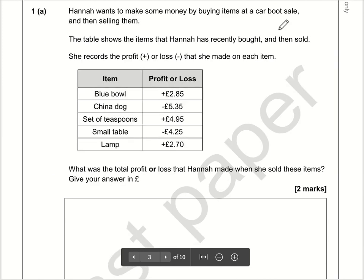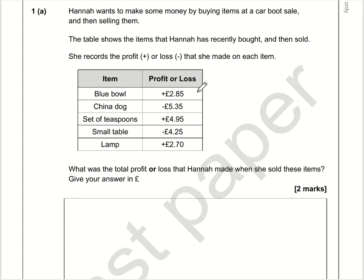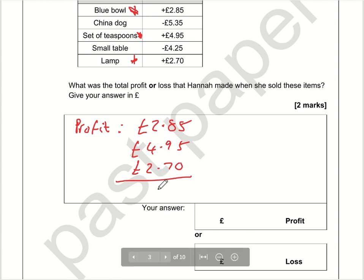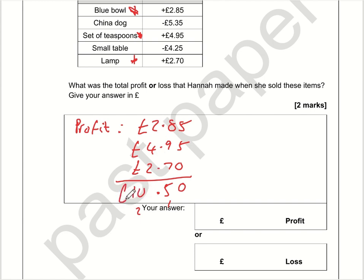We want to work out the total profit or loss when we factor in the individual profit or loss of each item. First, let's work out the profit from the items she's made a profit on: the blue bowl, the set of teaspoons, and the lamp. That is £2.85 plus £4.95 plus £2.70. Five plus five is ten, carry one; nine plus one is ten; and adding it all up gives a profit of £10.50.